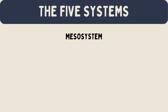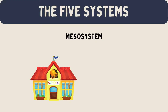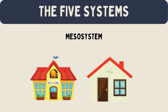The mesosystem is made up of the connections between microsystems. For example, the relationship between a child's home and school is part of the mesosystem. If parents are involved in school activities, it can help the child do better in school. These connections between different parts of a person's life are important.